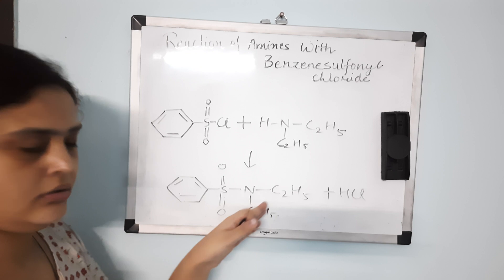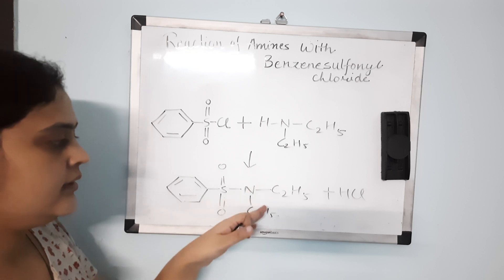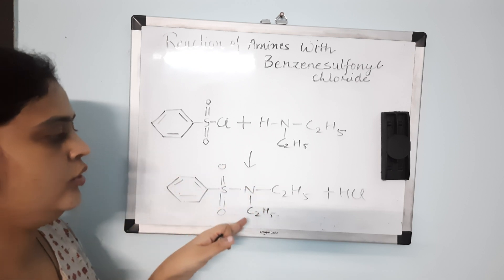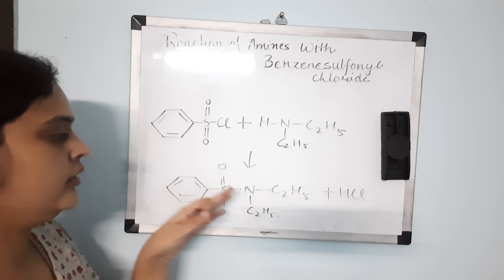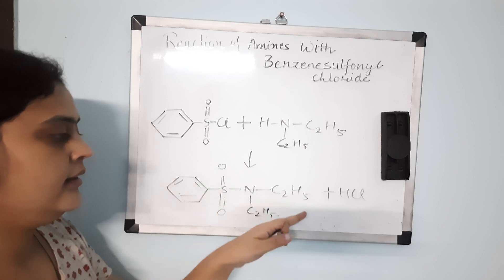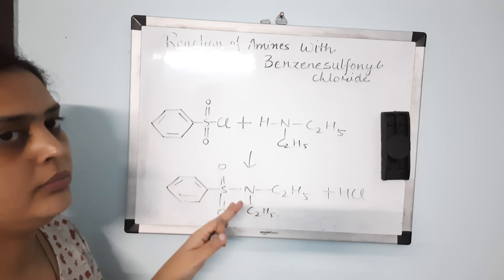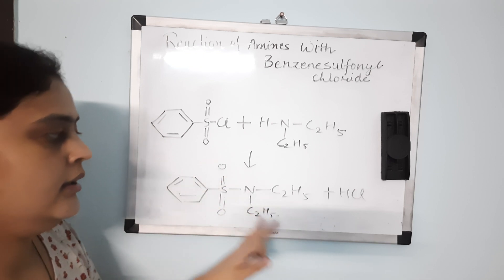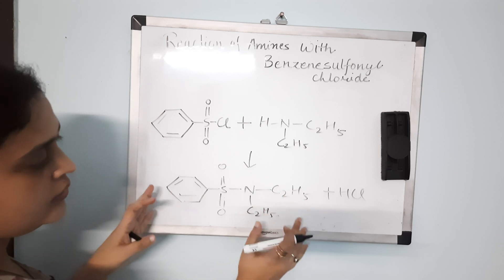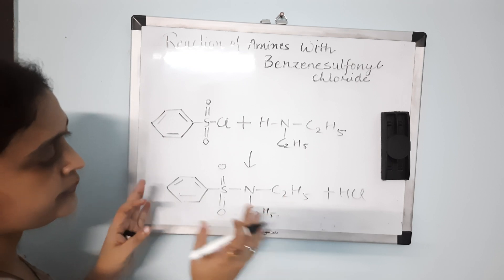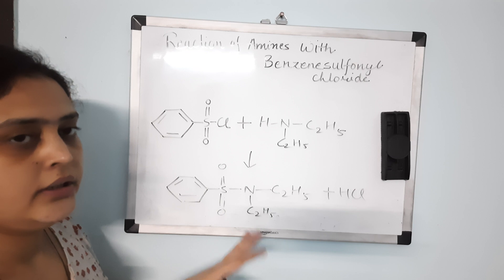After HCl is removed, there is no hydrogen atom attached to the nitrogen group in the product. Because there is no N-H bond, this molecule is not acidic, and since it is not acidic, it does not dissolve easily in alkali — it is insoluble in alkali. This differentiates it from the primary amine product.